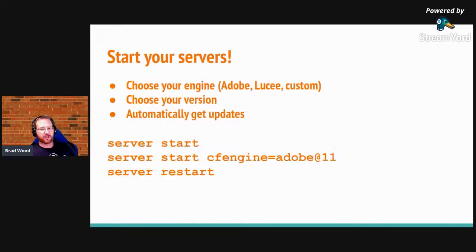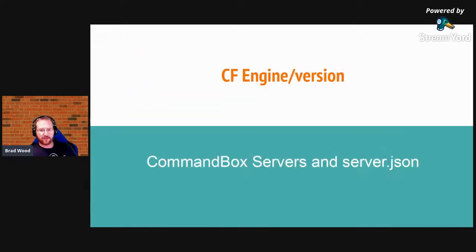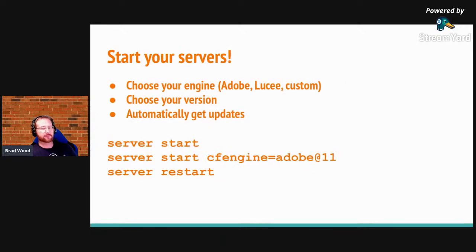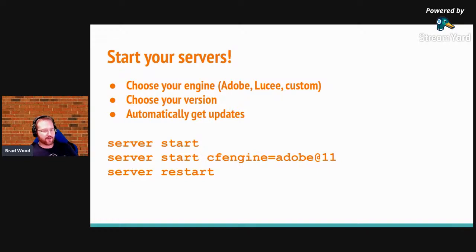Let's start with our first pillar: the ColdFusion engine and version. I should also mention the server.json file. As I go through this presentation covering the three pillars — CF engine, ColdFusion configuration like data sources, and code and libraries — there will be corresponding JSON files that CommandBox works with covering each of those.